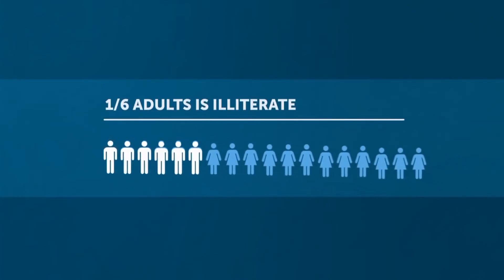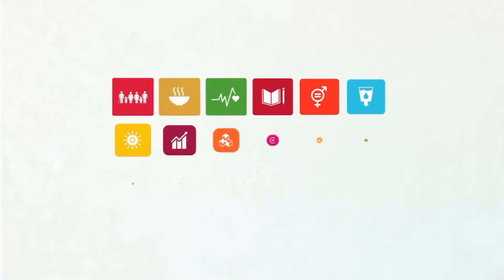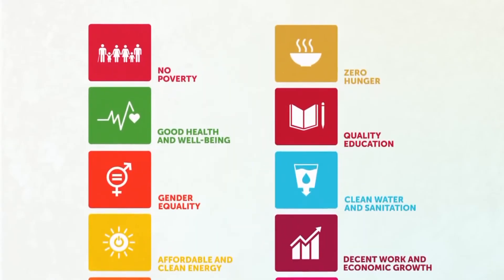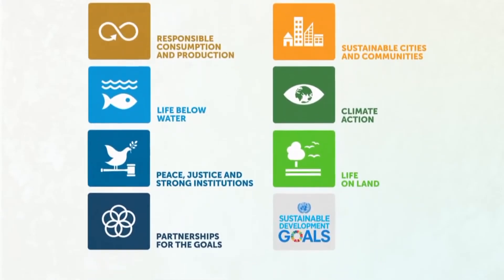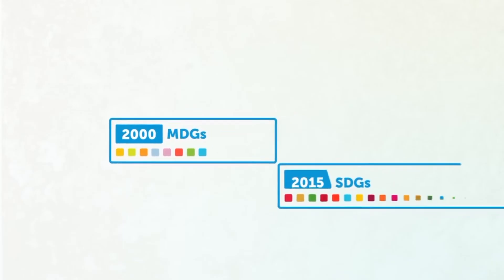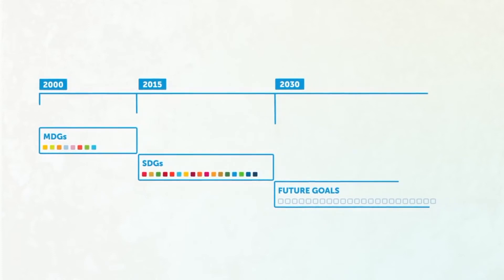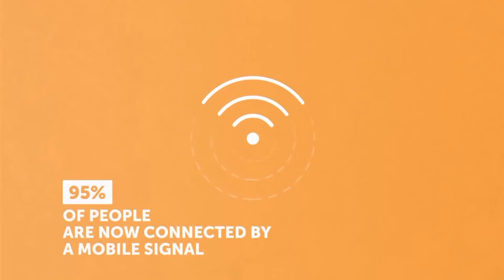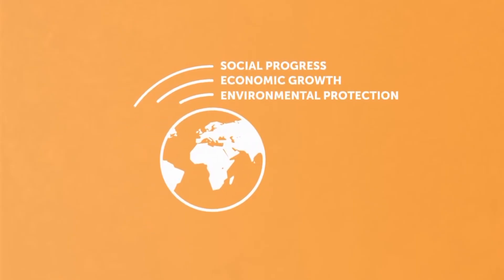Two-thirds of them are women. We think those are tough numbers, and so do leaders from the countries where we work. So in September 2015, they agreed on a new set of goals to help finish the work we all started in 2000. The new goals are called the Sustainable Development Goals, or SDGs. We have made significant progress in the last 15 years, and we think there's plenty of room for hope and action in the next 15 years. Today, the world is more connected by technology. We know more about how to balance the three pillars of sustainable development: social progress, economic growth, and environmental protection.